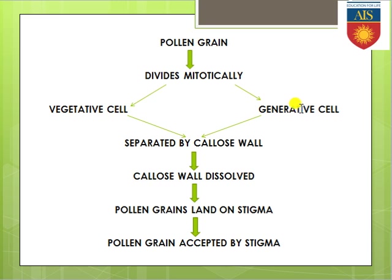First, the pollen grain divides mitotically, producing the vegetative cell and generative cell within its cytoplasm. The vegetative cell provides nourishment and the generative cell produces male gametes, but keep in mind these two cells were not present from the initial time — they are produced by mitotic division from the pollen grain. These two cells are then separated from each other by the callose wall.